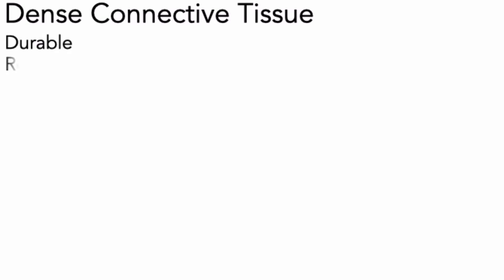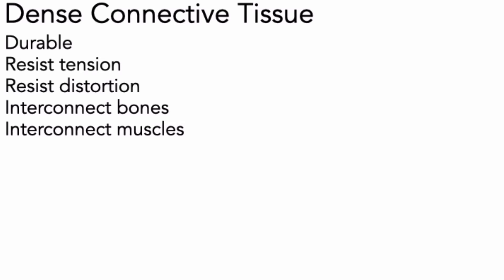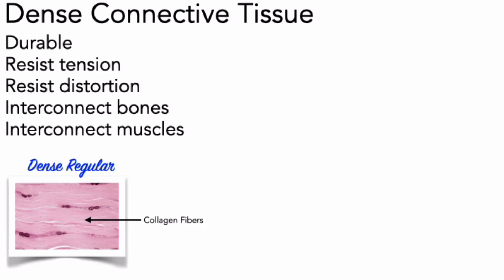Dense connective tissues are tough, strong, and durable. They resist tension and distortion, and interconnect bones and muscles. Dense connective tissues consist mostly of collagen fibers, and are also called fibrous or collagenous tissues. In dense regular connective tissue, the collagen fibers are parallel to each other, packed tightly and aligned with the forces applied to the tissue. Tendons are made of dense regular connective tissue that attach skeletal muscles to bones. Ligaments resemble tendons but connect one bone to another; ligaments often contain elastic fibers as well as collagen fibers, and thus can tolerate some stretching.